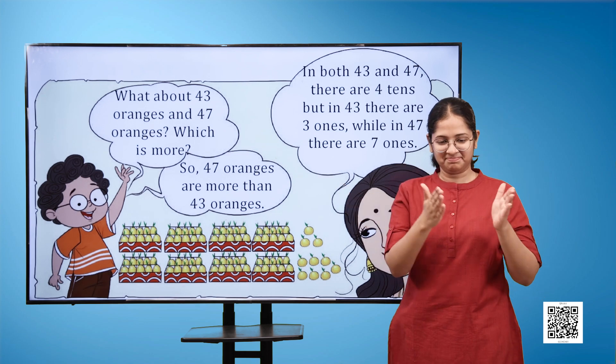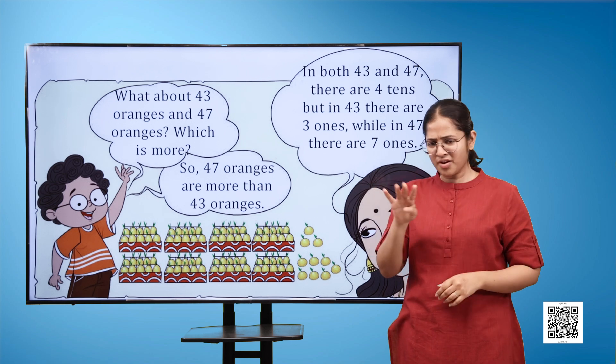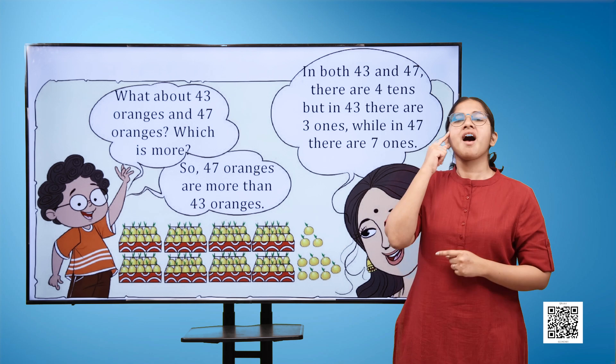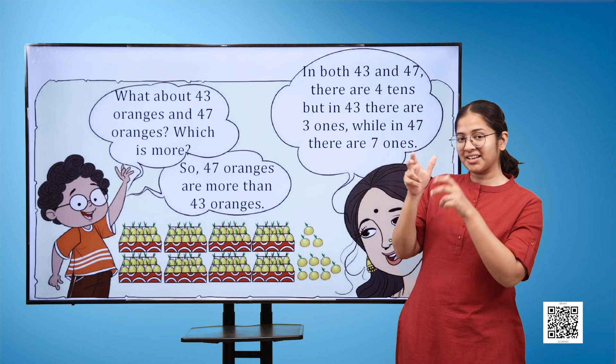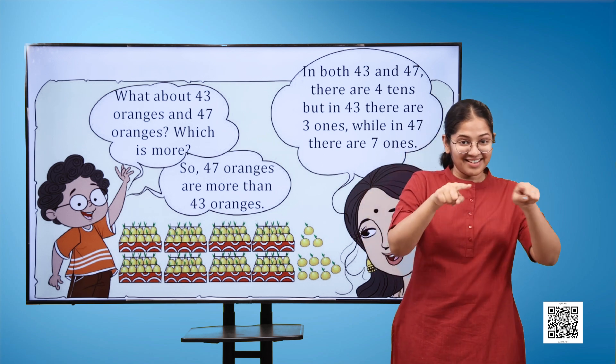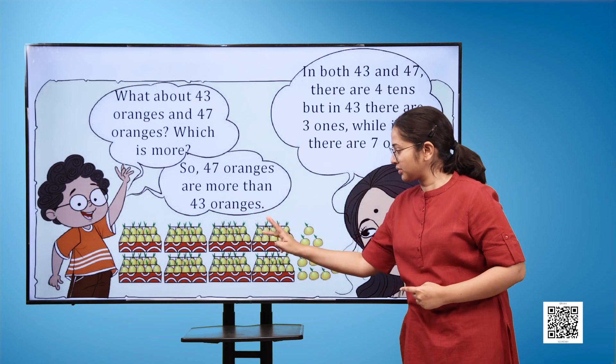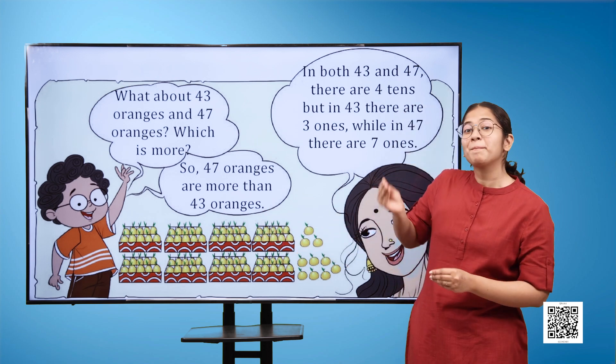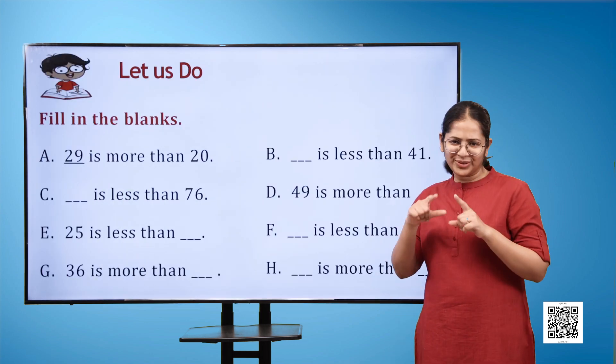Now we have an image here. The boy says what about 43 oranges and 47 oranges, which is more? The lady says in both 43 and 47 there are four tens, but in 43 there are three ones while in 47 there are seven ones. The boy replies so 47 oranges are more than 43 oranges. Let us do.